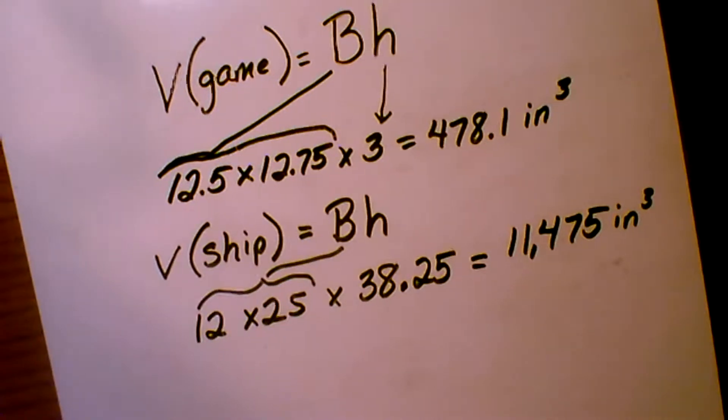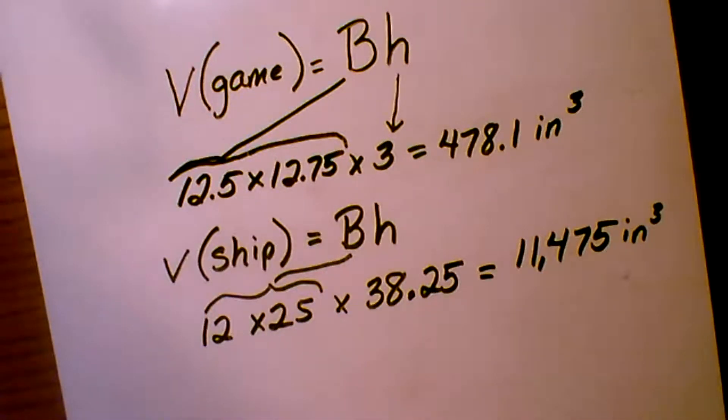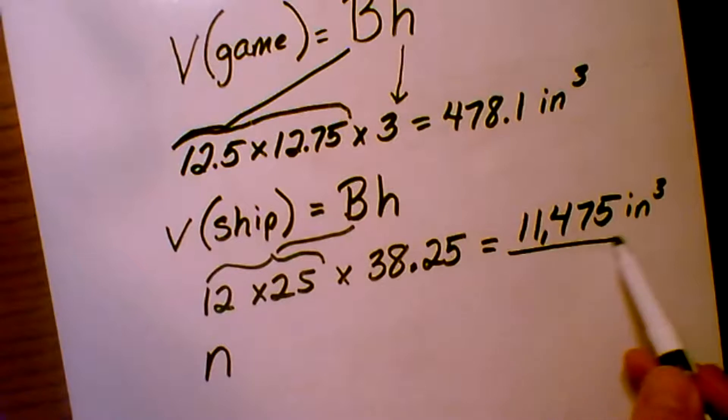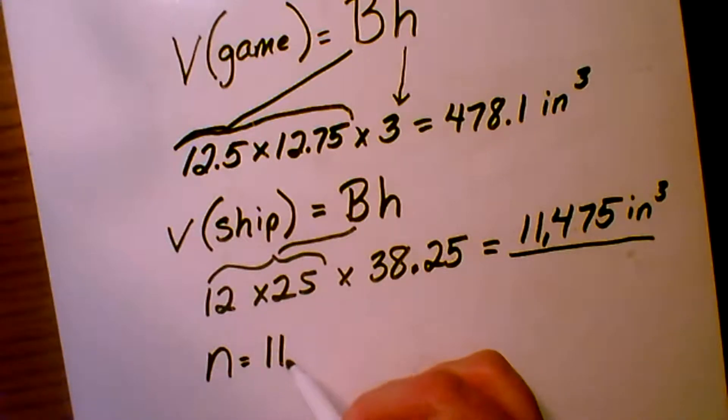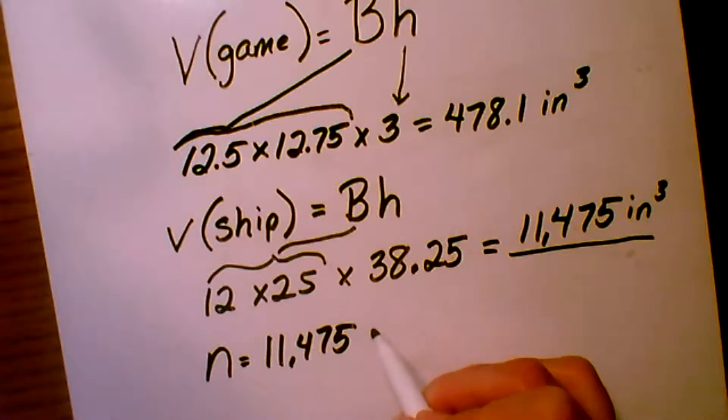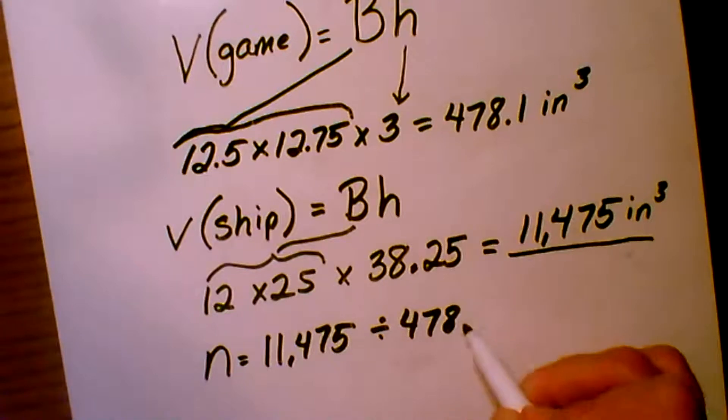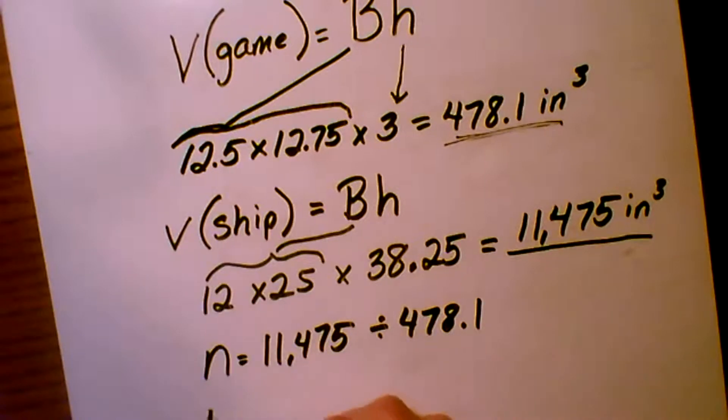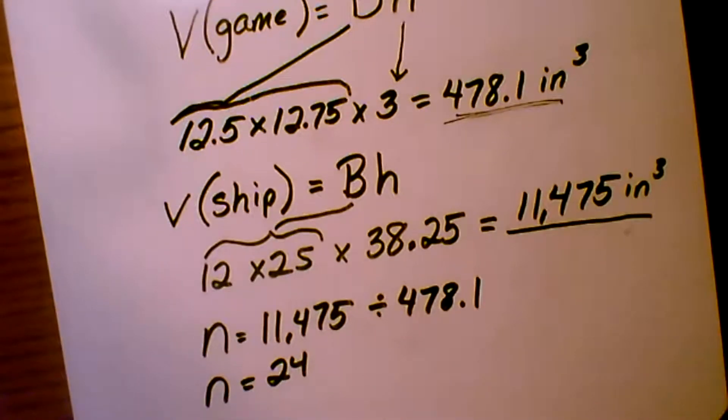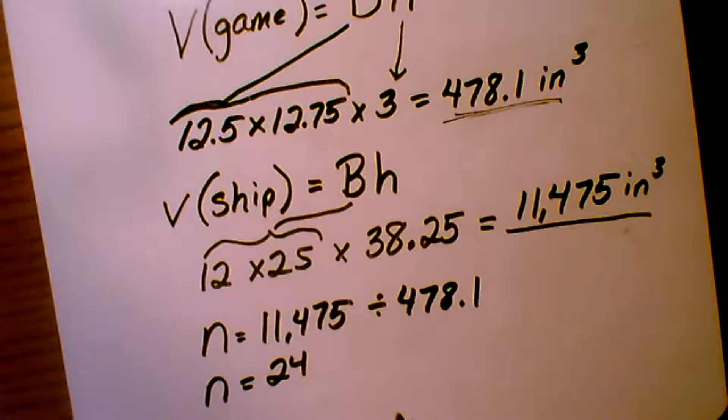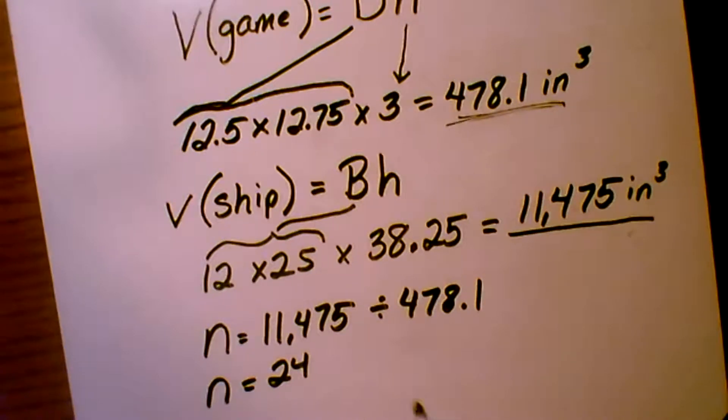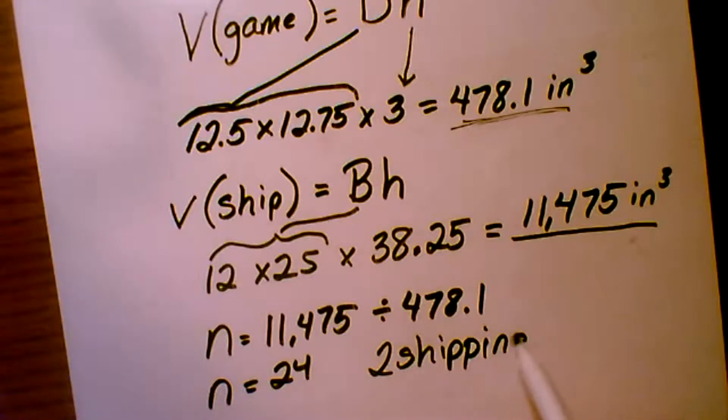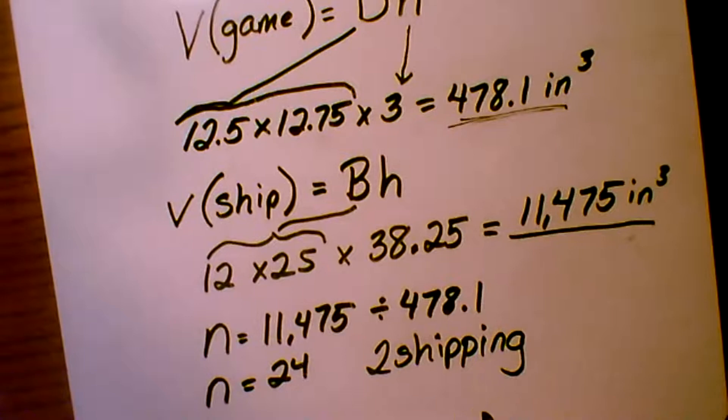So to determine the number of game boxes that will fit into each shipping box, we say n—that's going to be for number—11,475 divided by the volume of the card game boxes. That's this number here. And our answer is 24. So that means that there's 24 game boxes in each shipping box. And remember, we had to ship 48 boxes, so we're going to need two shipping boxes to get the order to whoever ordered 48 game kits.